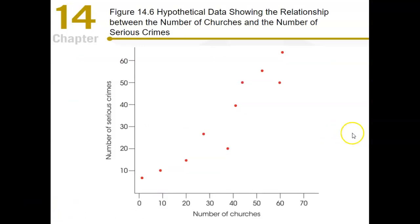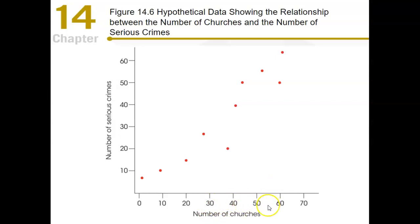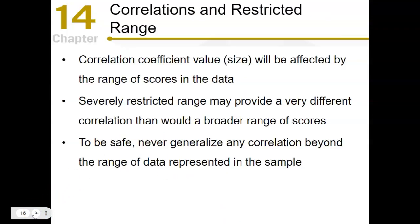A famous example: as the number of churches in a town increases, the number of serious crimes also increases. The number of churches probably has little to do with crime — but large towns with big populations will have more churches and also more crime. Even though there's an apparent relationship, we can't say one is causing the other.